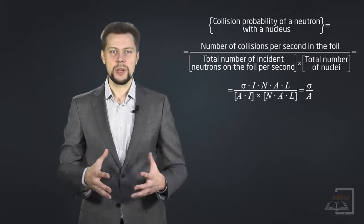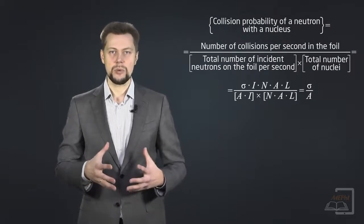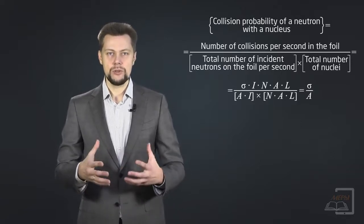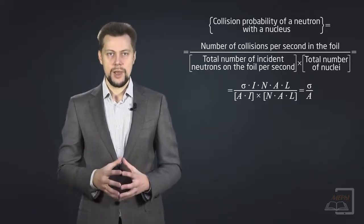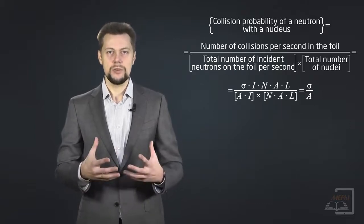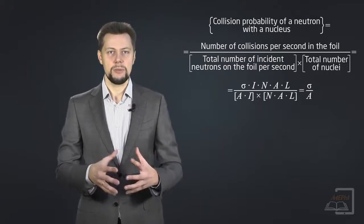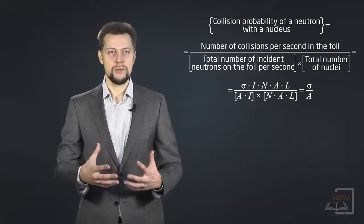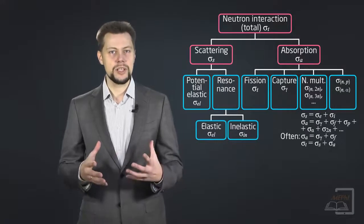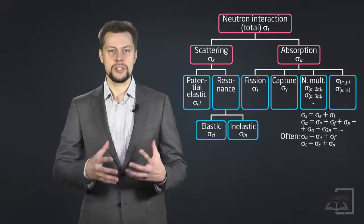Another interpretation of microscopic cross-section in terms of probability: sigma is a collision probability of a neutron with a nucleus. As the probability is dimensionless, it can be concluded sigma is the effective area given by the nucleus to an incident neutron for a nuclear reaction. Every nuclear reaction has the probability corresponding to their microscopic cross-section.